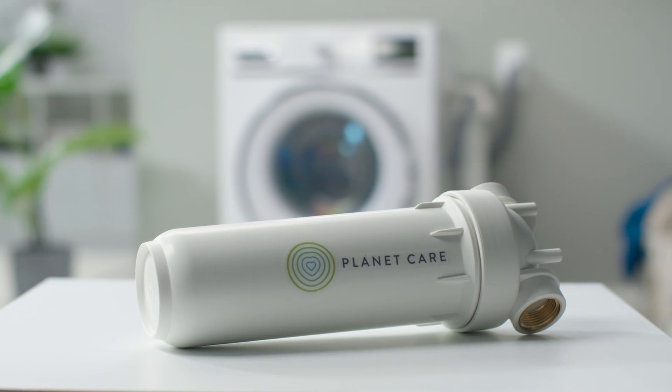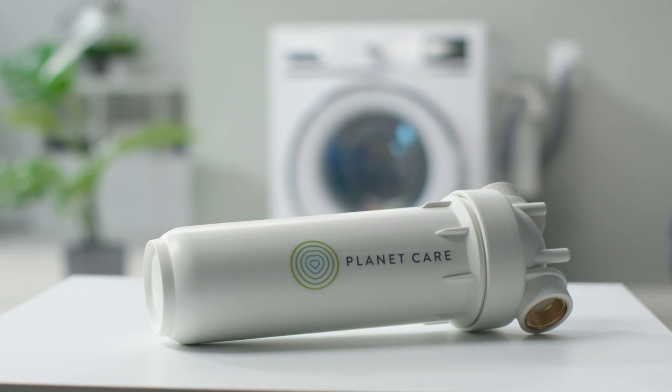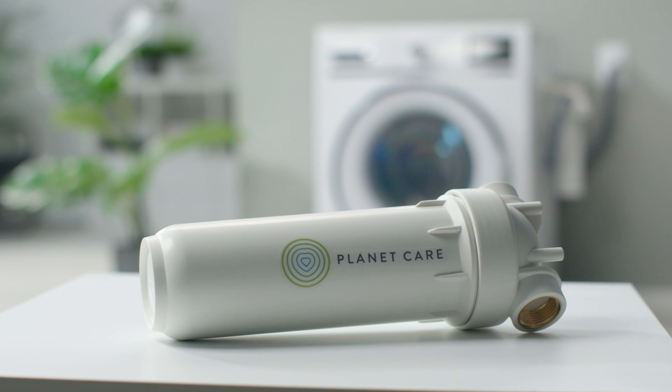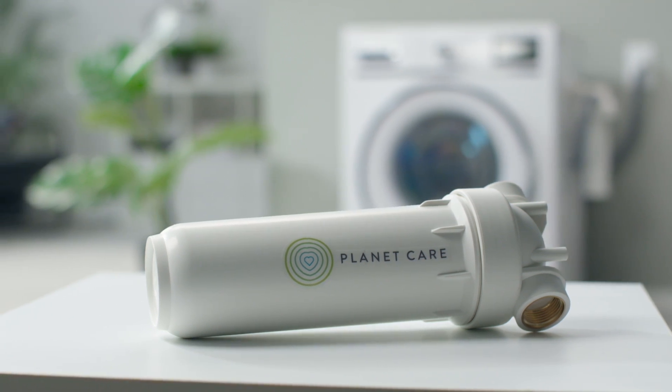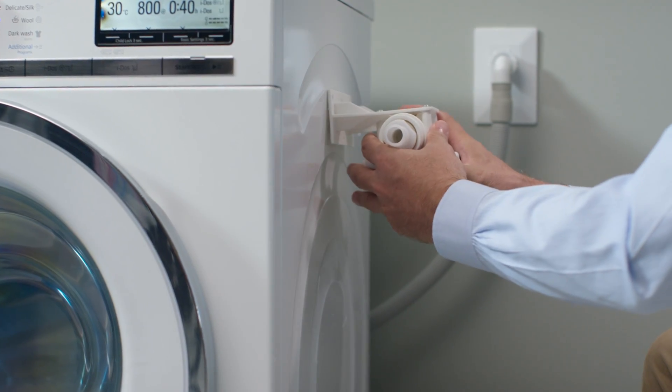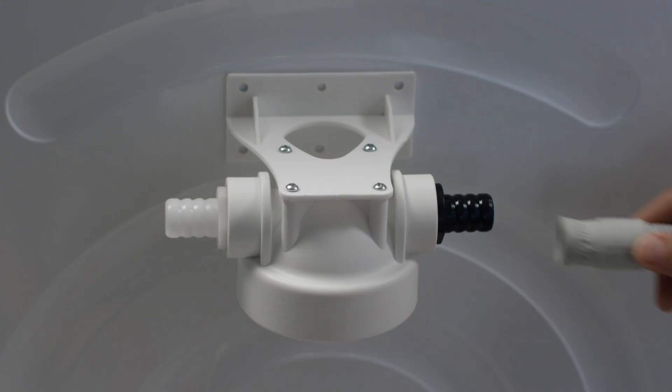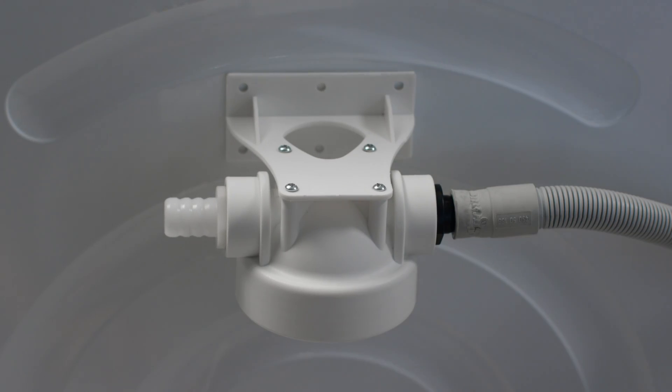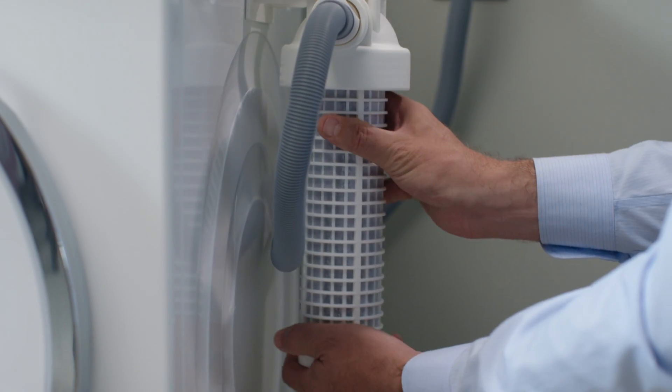In this video, we will show you how to use your PlanetCare microfiber filter in three simple steps. How to attach the filter to the washing machine or wall, how to connect the filter to the water from the washing machine and drain, and how to replace the cartridge.